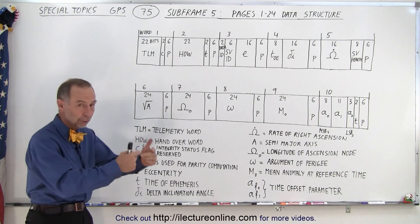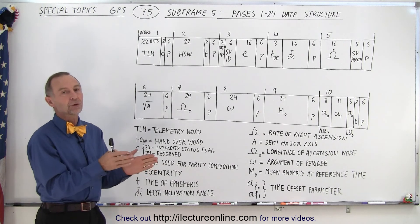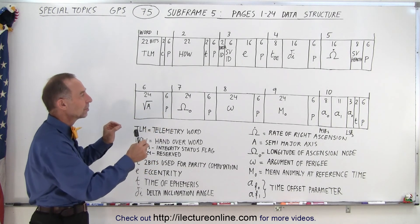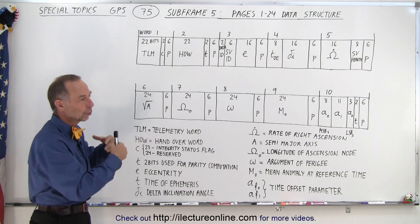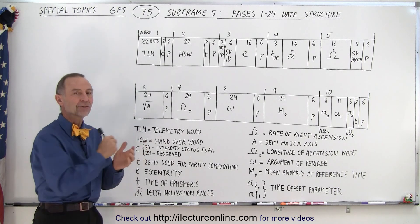Now remember pages 1 through 24 are exact duplicates of one another in structure. They of course contain different information because each page contains the telemetry data or orbital information about that particular satellite.